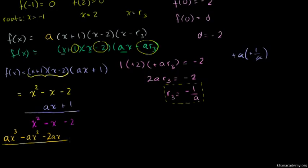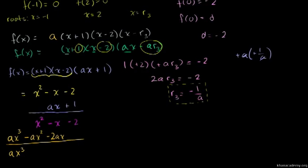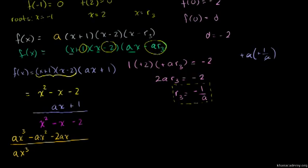We get 1 + 2a times x squared. Then we have -2ax. This gives us (1 + 2a) times x, then -2 at the end.